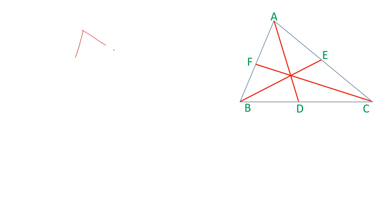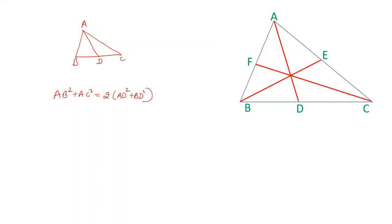Before we start the question, let me give you a theorem which is known as Apollonius theorem. In Apollonius theorem, the length of the median can be calculated with the formula: AB² + AC² = 2AD² + 2BD². The sum of squares of the two sides on which the median is not drawn equals twice the median squared plus twice the half-side squared. This theorem is known as Apollonius theorem.